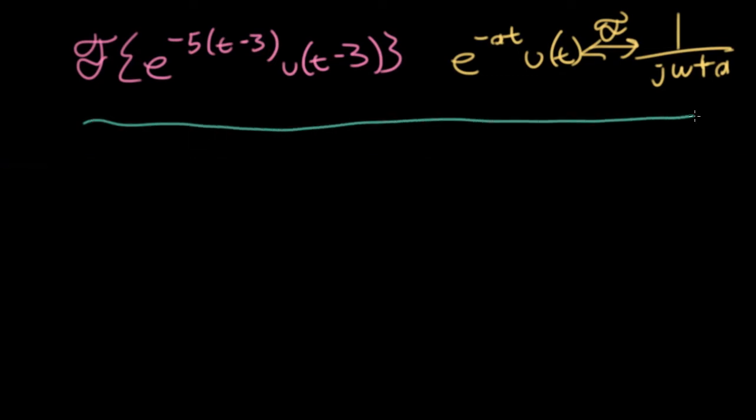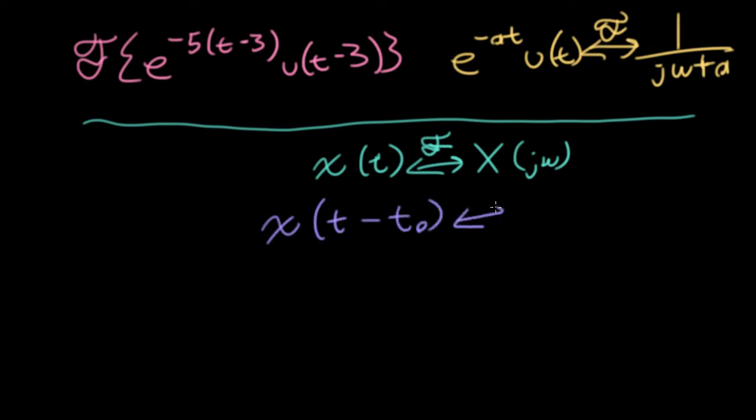So a lot of these properties will have a form along the following lines. We'll assume that we know some particular Fourier transform pair, little x of t transforming into big X of j omega. We'll assume that's given to us somehow. And the property we're going to look at today will ask, what's the Fourier transform of x of t minus t naught in terms of big X of j omega?